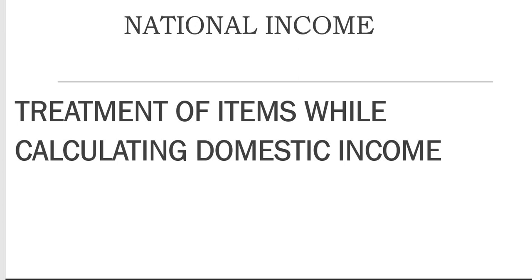The second question, which is very important and has been coming for years, is the treatment of items while calculating domestic income. When doing the treatment for domestic income, you have to pay special attention to your domestic territory. Categories that are not added in national income — like second-hand goods and transfers — will not appear. Beyond that, you have to see whether the transaction or production activity occurred within our domestic territory or not.